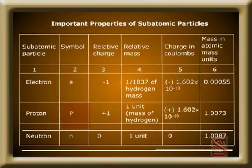For proton, the symbol is P. Relative charge is plus 1. Relative mass is 1 unit of hydrogen mass. Charge in coulombs is plus 1.602 into 10 to the power of minus 19. Mass in atomic mass units is 1.0073.